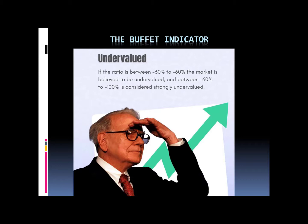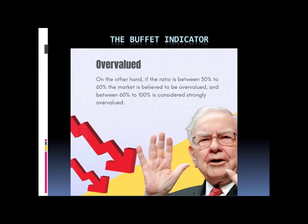It's considered undervalued if the ratio is between minus 30% to minus 60%, and strongly undervalued between minus 60% to minus 100%. For overvalued, on the other hand, the ratio goes between 30% to 60%.